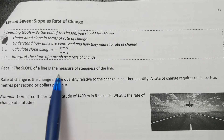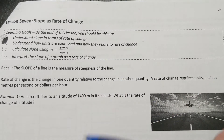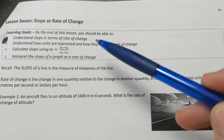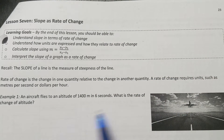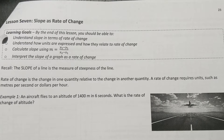Recall that the slope of a line is the measure of how steep the line is. If the line is quite steep, it will have a very big slope; if it is not very steep, it will have a small slope. Rate of change is the change in one quantity relative to the change in another quantity, and it requires units — such as meters per second or dollars per hour.